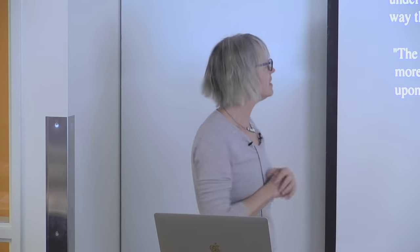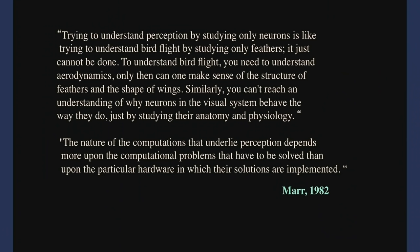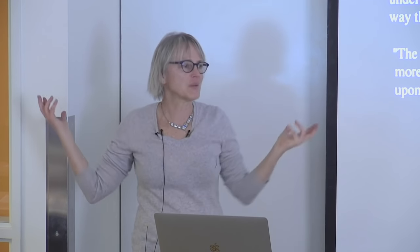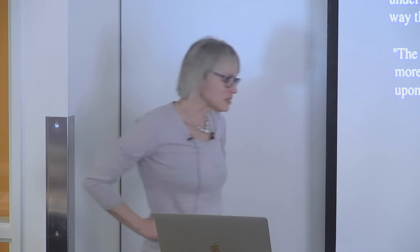Marr writes: trying to understand perception by studying only neurons is like trying to understand bird flight by studying only feathers — it just can't be done. To understand bird flight you need to understand aerodynamics; only then can you make sense of feathers and wing shape. Similarly, you can't reach an understanding of why neurons in the visual system behave the way they do just by studying their anatomy and physiology. You have to understand the problem being solved.